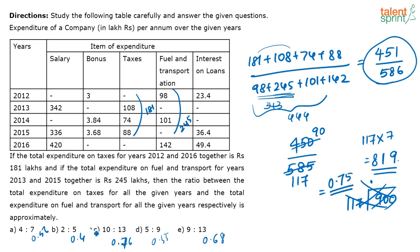By looking at the options, you can directly determine this is going to be your answer. Even if you don't take those fractions at the beginning, you know this is somewhere close to 0.7. You can immediately eliminate three options, leaving only two options close to 0.7. Fine tuning confirms the answer. The question is easy but calculations take a bit of time, so best to approximate and solve at some point.